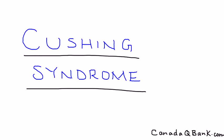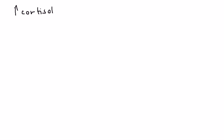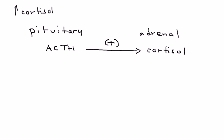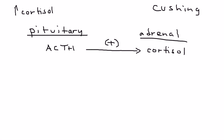Cushing's syndrome is a disorder in which you have increased levels of cortisol. This can happen either because of a problem with the pituitary gland or the adrenal gland. The adrenal gland secretes several hormones, one of which is cortisol — that's at the heart of this syndrome. The pituitary gland releases ACTH, and ACTH stimulates the production of cortisol from the adrenal gland.